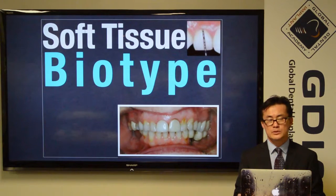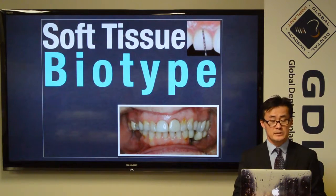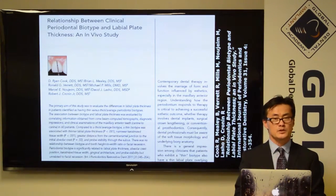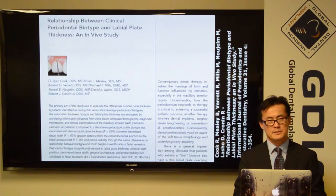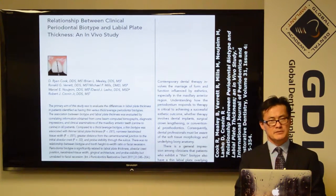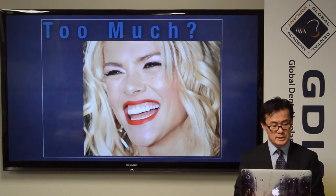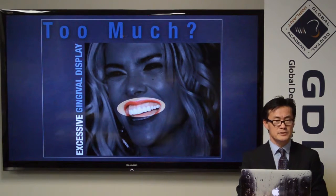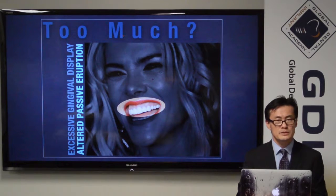Soft tissue can be classified into two distinct types — think of it as being dichotomous, like being rich and poor. You're either going to have abundance, or a thick biotype, or you're going to have what's called a thin biotype, as clearly demonstrated in a number of recent contemporary studies. The thick biotype has an abundance of blood supply and tends to preserve bone and structure, but can cause pseudo-pockets and cosmetic issues. Excessive gingival display — the so-called gummy smile, also called altered passive eruption — is not the most attractive thing and prompts many patients to seek care.